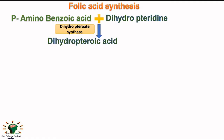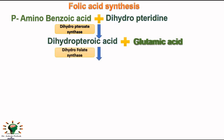This dihydropterin acid then interacts with glutamic acid in the presence of dihydrofolate synthase enzyme, and there will be formation of dihydrofolic acid. Notably, dihydropterin synthase enzyme is the key enzyme — the main enzyme for bacterial folic acid synthesis.